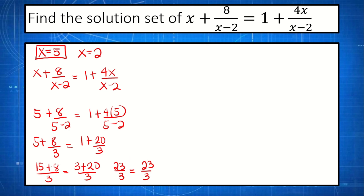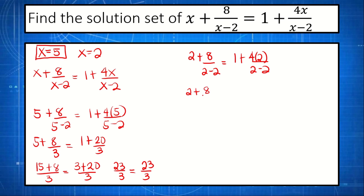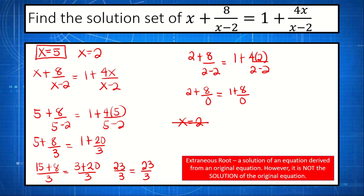Therefore x equals 5 is a solution to our original equation. Now substituting x equals 2: 2 plus 8 over 2 minus 2 equals 1 plus 4 times 2 over 2 minus 2. This gives 10 over 0 equals 1 plus 8 over 0. Remember, dividing by 0 is not allowed. So x equals 2 makes our denominator equal to 0; therefore x equals 2 is not a solution.